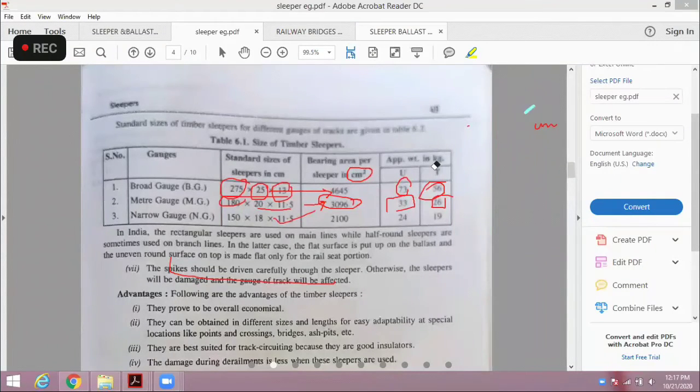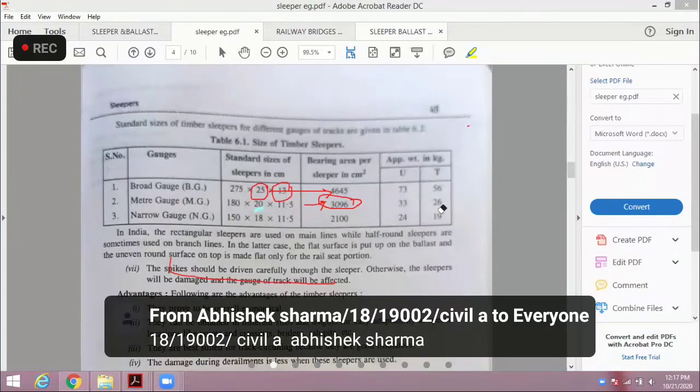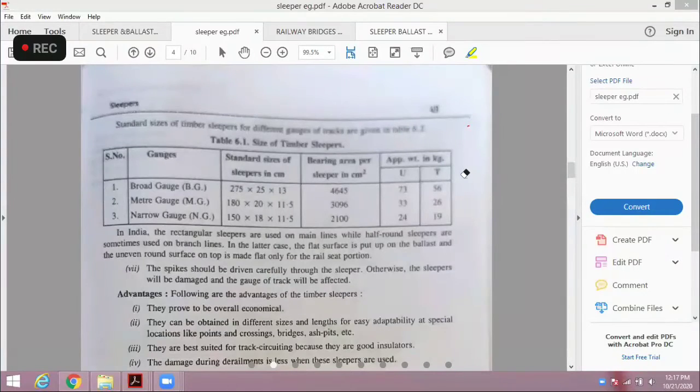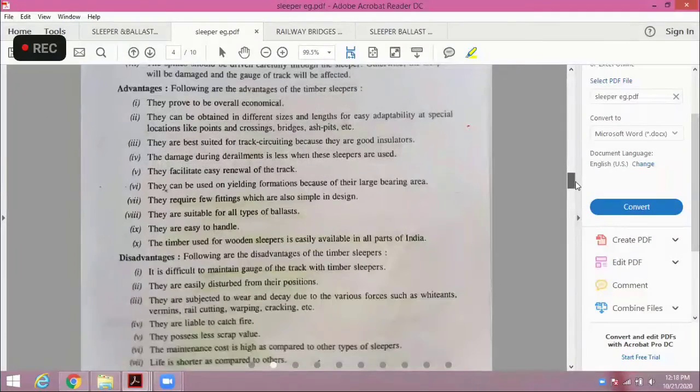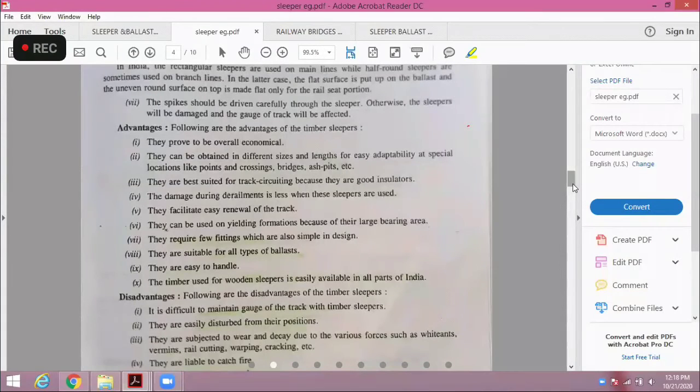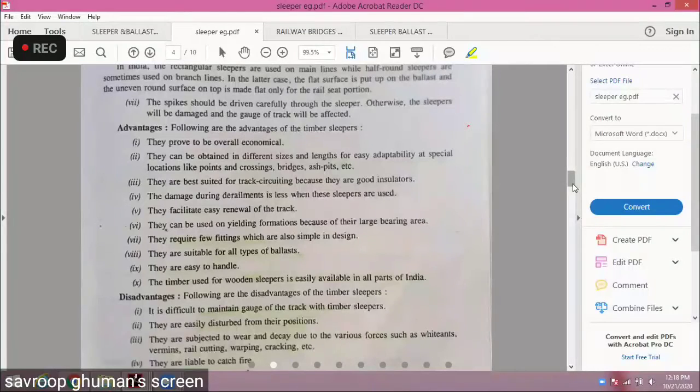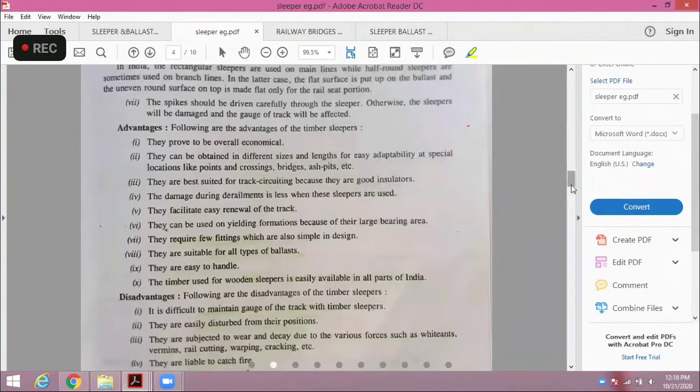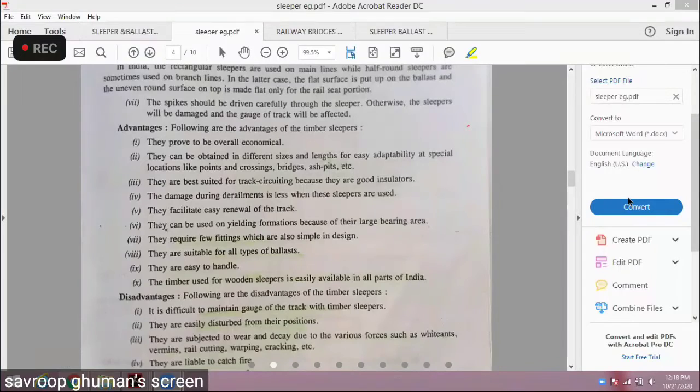When you have to fix this sleeper and rail, then spikes should be driven carefully through the sleeper, otherwise the sleeper will be damaged. Otherwise our sleeper can be damaged and the gauge will be affected. This was your basic wooden advantages and disadvantages. This is economical and you can carry it very easily, fittings easily you can apply, and suitable for ballast and tamping action. They are easily handled.